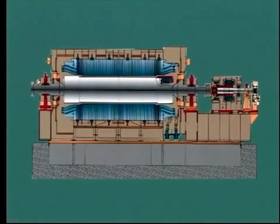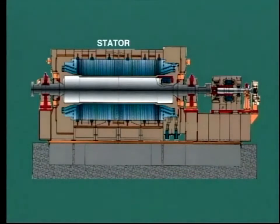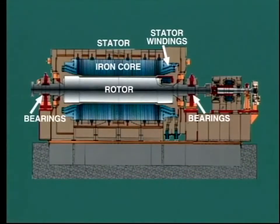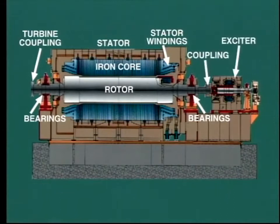This diagram shows the major components of a typical generator, including the stator, iron core, stator windings, rotor, bearings, coupling to the turbine, the exciter and exciter coupling.